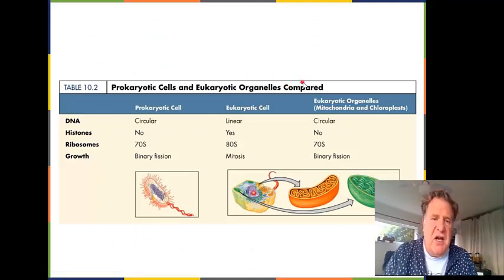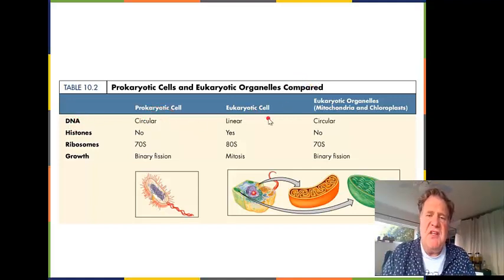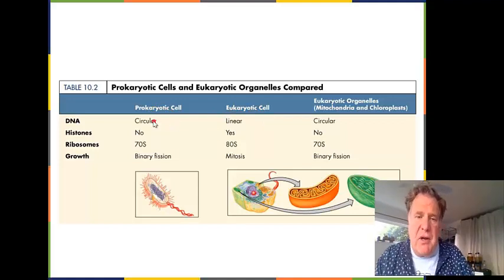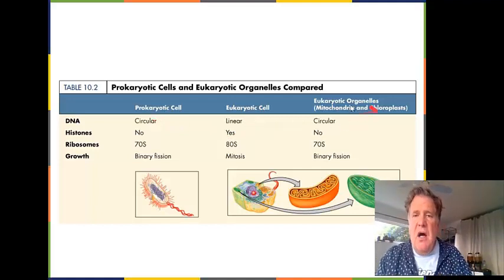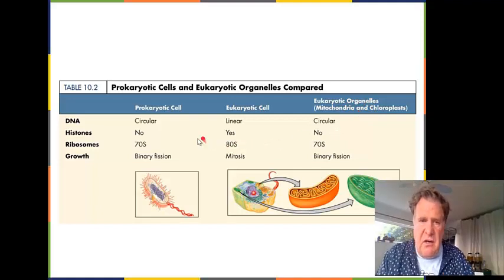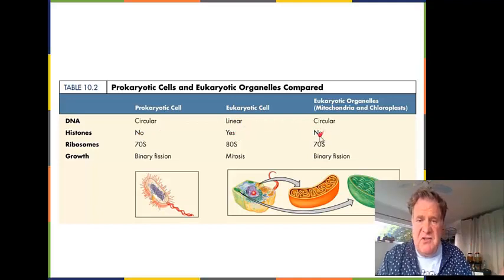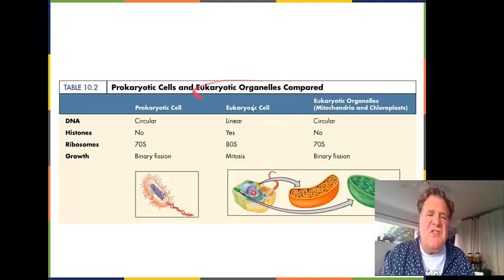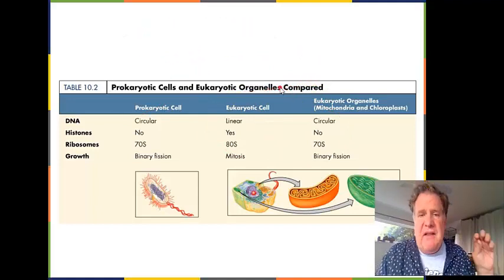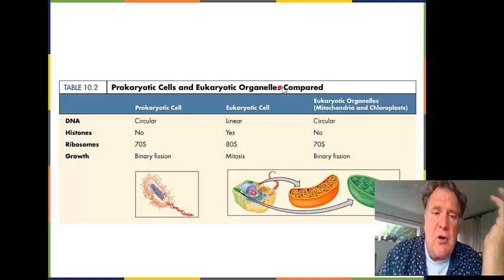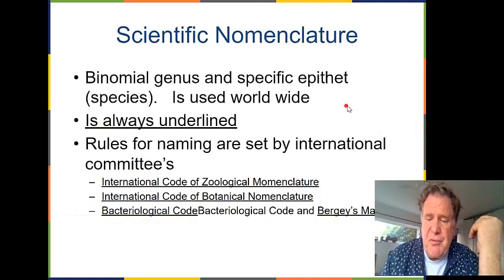When we compare prokaryotic and eukaryotic cells, prokaryotic cells tend to have smaller genomes with a circular genome, while eukaryotic cells have linear genomes. Prokaryotes don't have histones, but eukaryotic cells do — and notably, mitochondria and chloroplasts also don't have histones. This is one of the reasons why we think that many eukaryotic organelles actually came from prokaryotic cells.